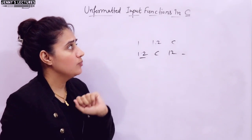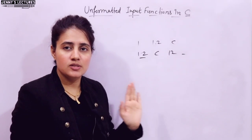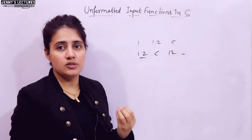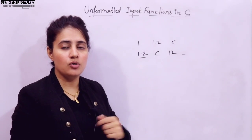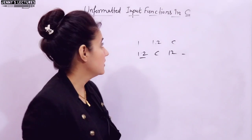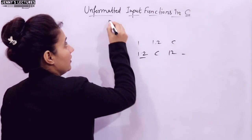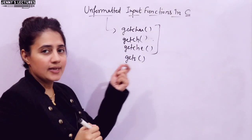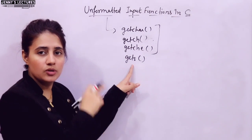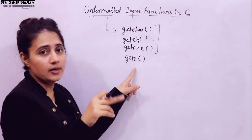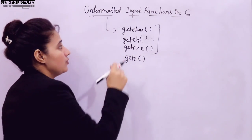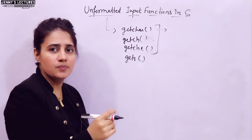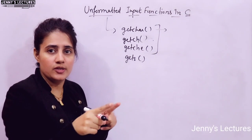I'll be discussing all unformatted input functions in C, how to use them, and what output you will get when you use them in your program. There are three input functions that take a single character as input, and one that takes a complete string — a complete line until you press enter. First, let us discuss the getchar() function — this function reads a single character from the standard input device, which is the keyboard.